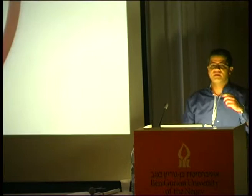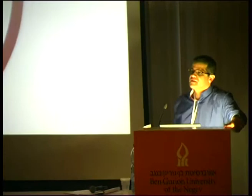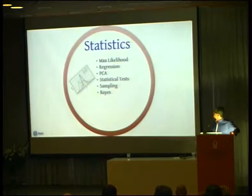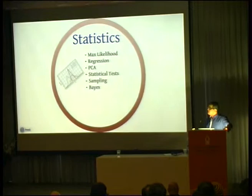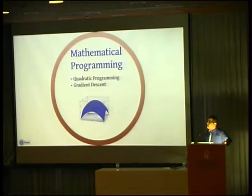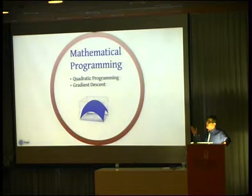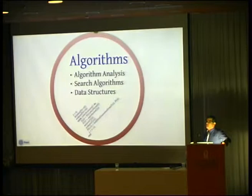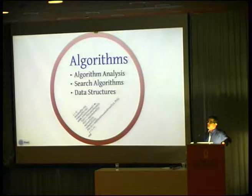The domain of data mining begins its roots from three major pillars. One of them is statistics, which contributes important ideas like maximum likelihood and methods like regression or PCA. We also have mathematical programming, which contributes optimization methods frequently used in data mining algorithms like linear programming or gradient descent. And computer science and algorithms help us analyze algorithms and suggest data structures that are frequently used as part of data mining algorithms.